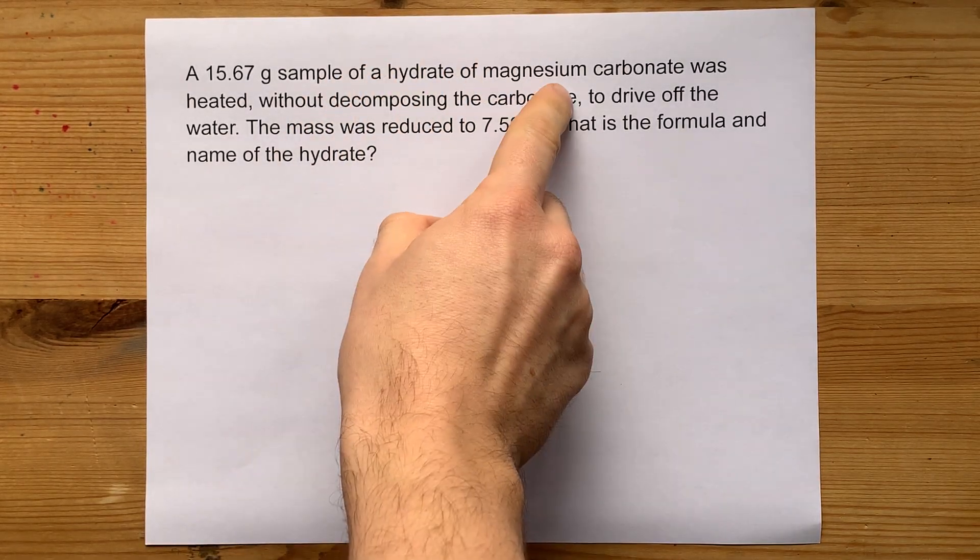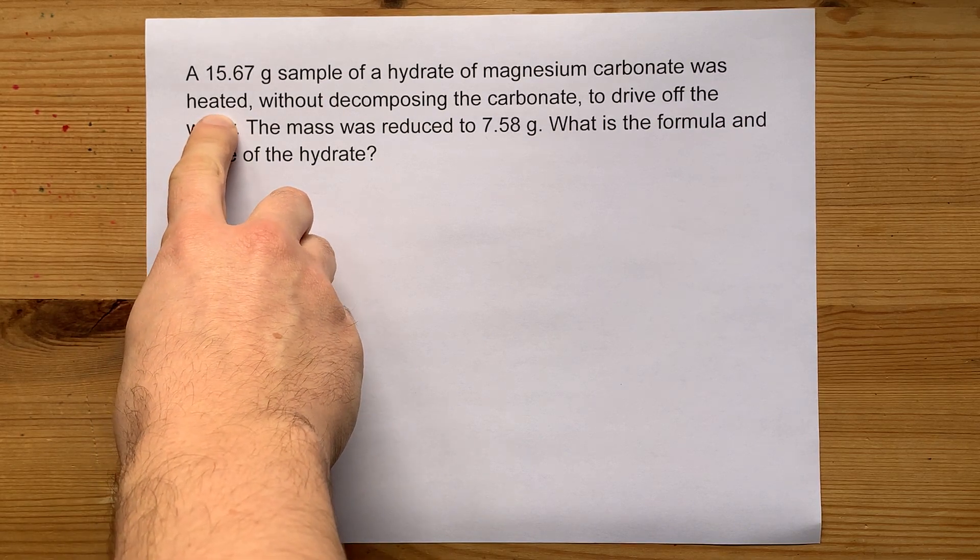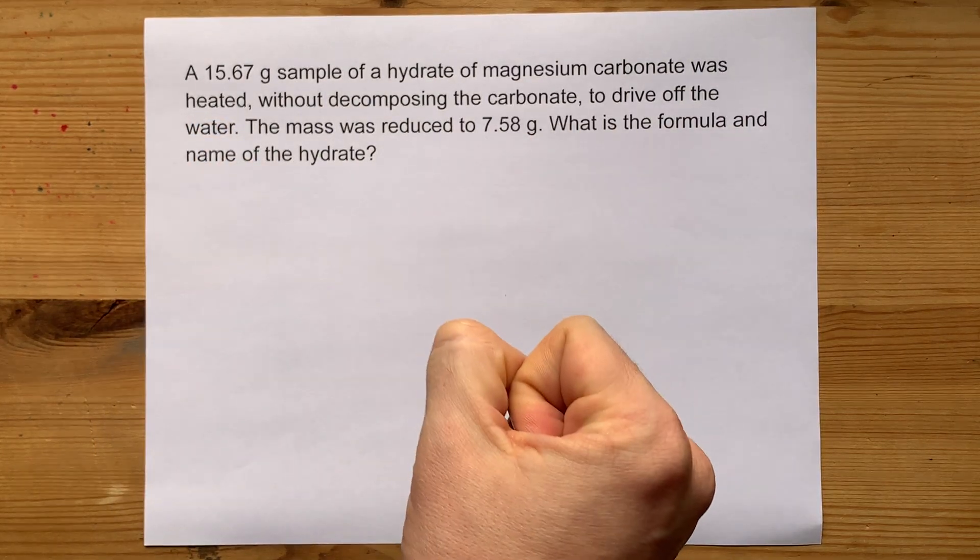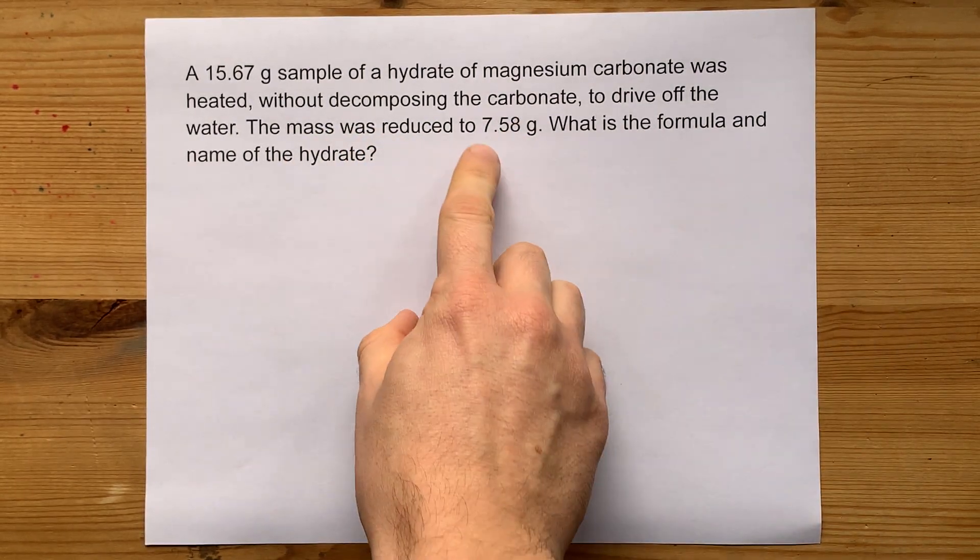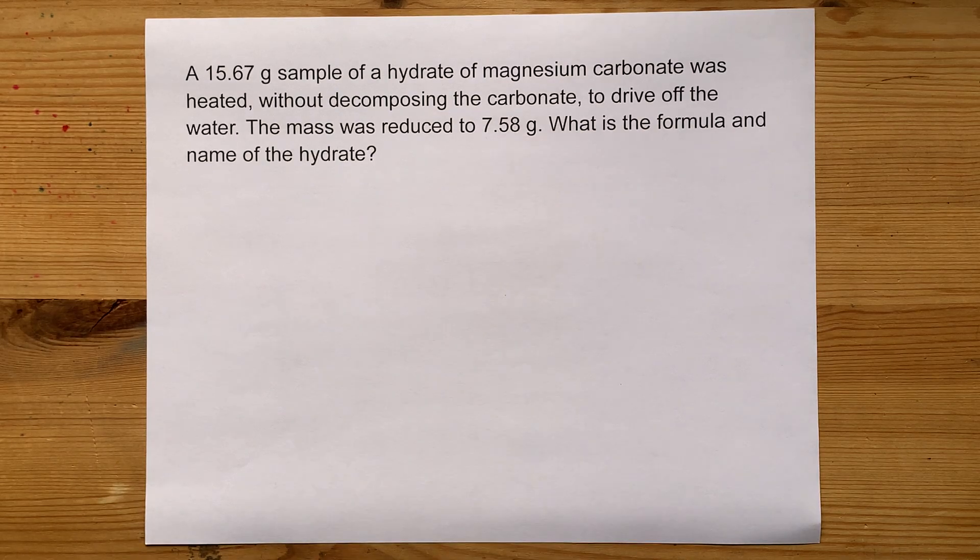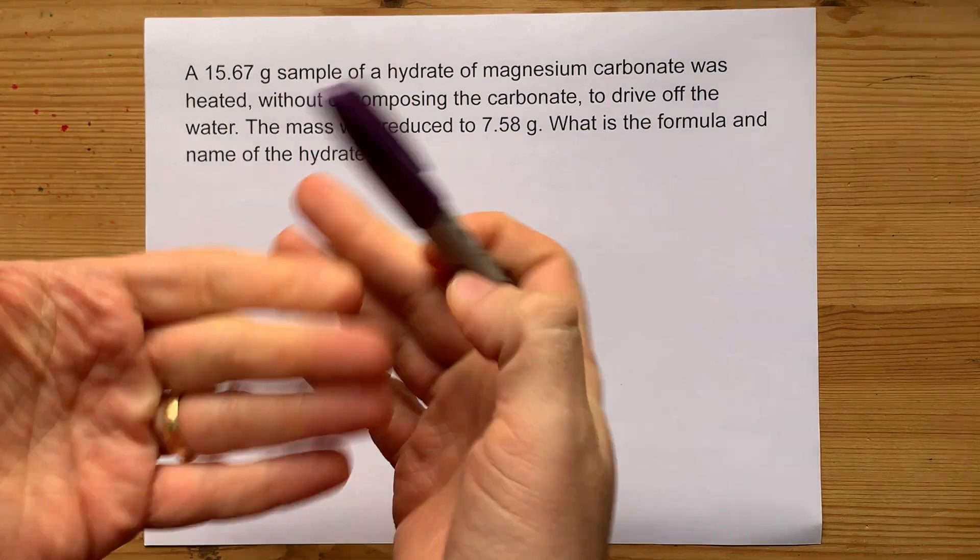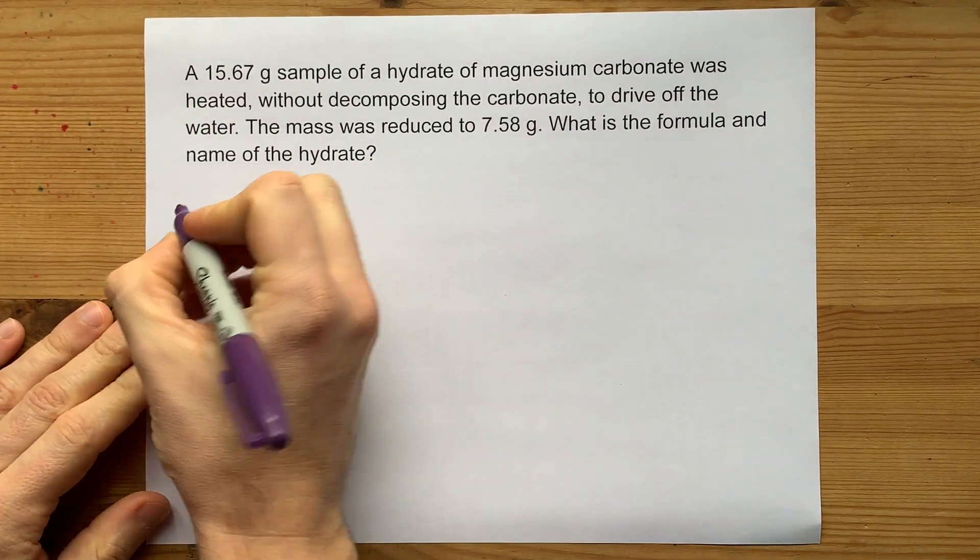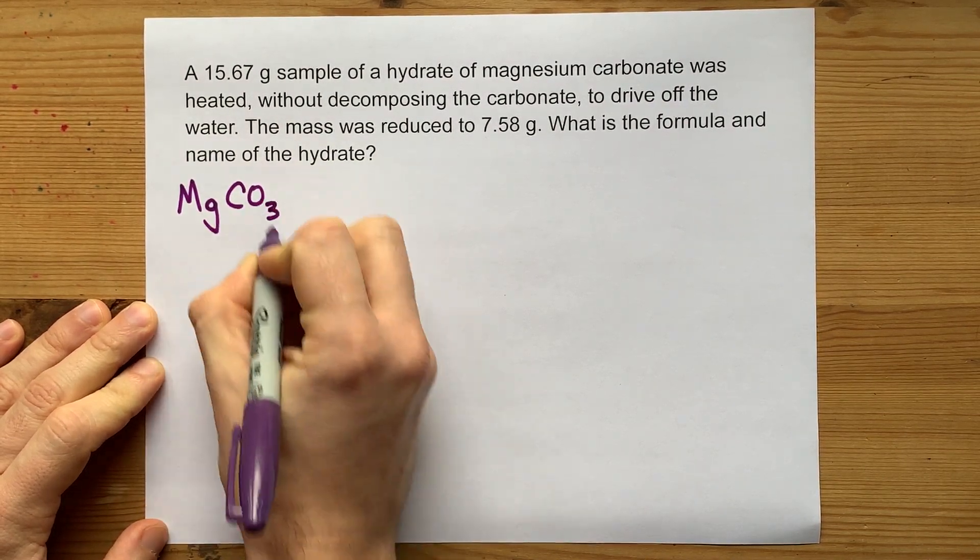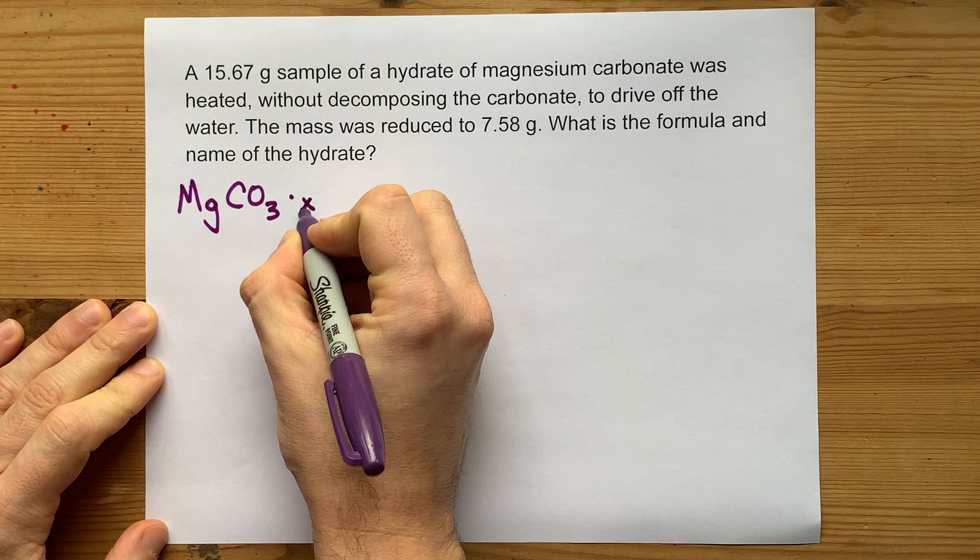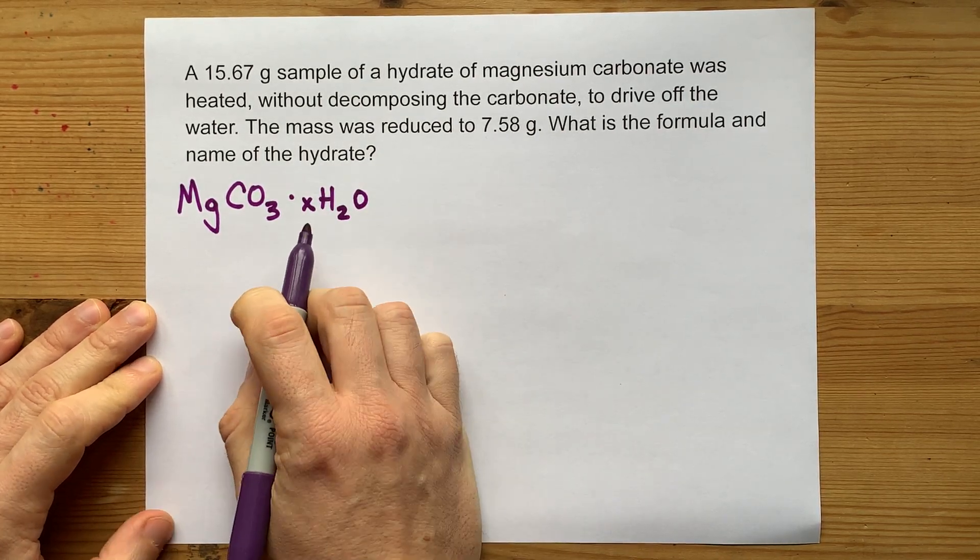We have a hydrate of magnesium carbonate that's going to get heated so all the water evaporates away. The mass will go down because we're losing all the water, to 7.58 grams. With this information, we can figure out the formula of the hydrate and the name as well. Here's the idea: we have magnesium carbonate, MgCO3, dot some number of waters. This could be monohydrate, dihydrate, trihydrate.